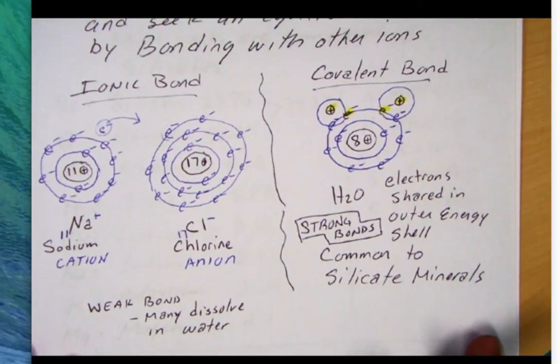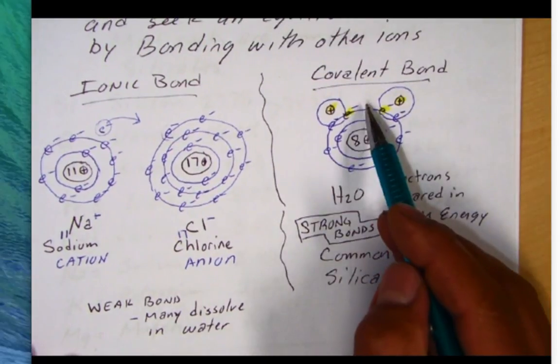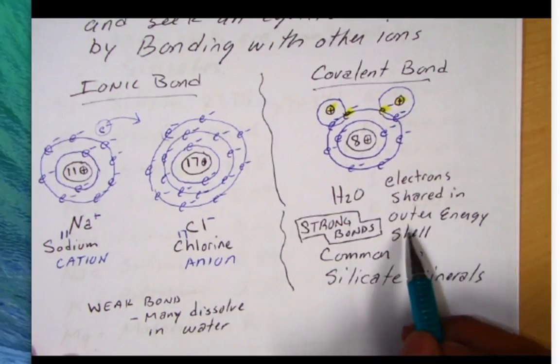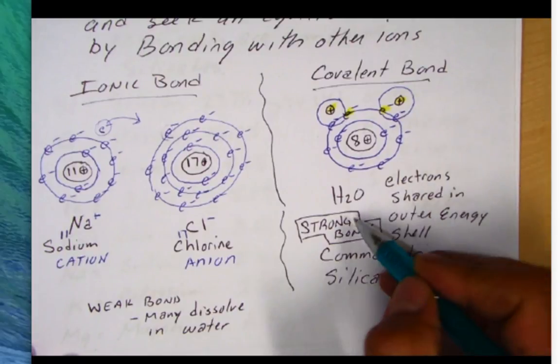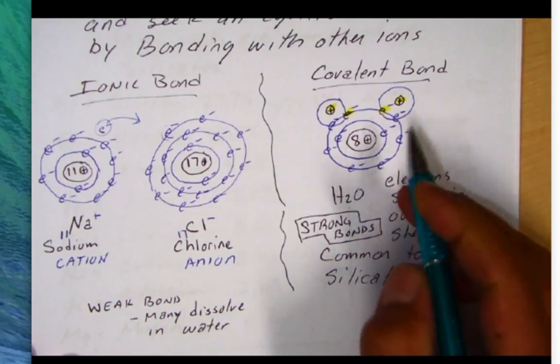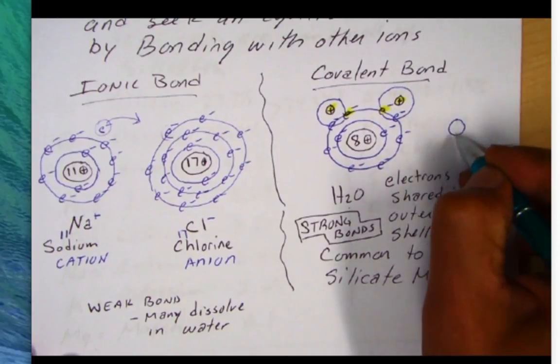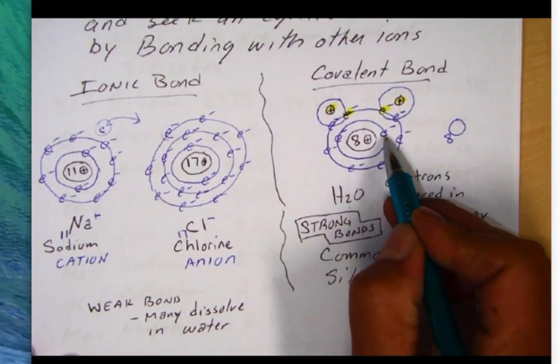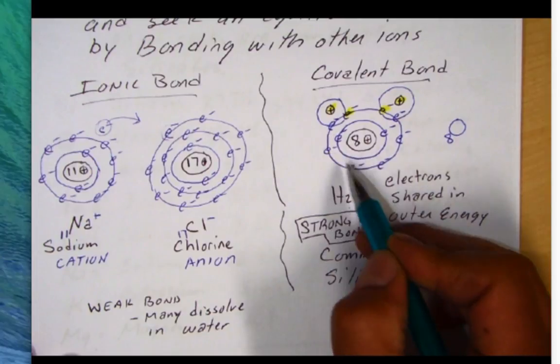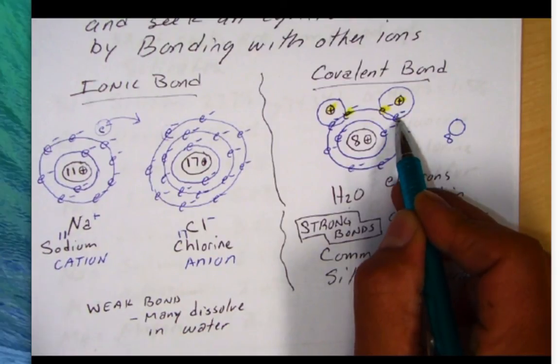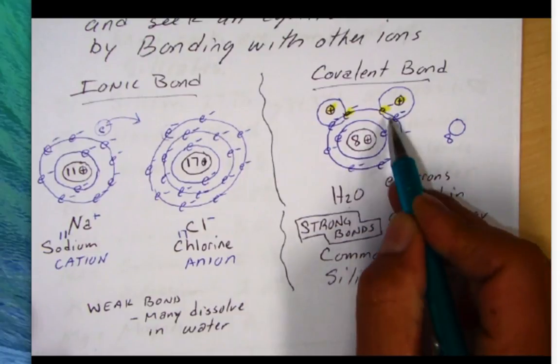Now a stronger bond is one called the covalent bond. This bond involves the sharing of electrons. So you share electrons in the outer energy shell. A good example is a water molecule. Here we have oxygen with atomic number 8. So it's going to have 8 protons in its nucleus. I'm going to put 8 electrons around it. So there's 2 in the first shell. Then I put 1, 2, 3, 4, 5, 6 in the second shell. So oxygen would like to have 2 more electrons to fill this outer shell and have 8 in that shell.